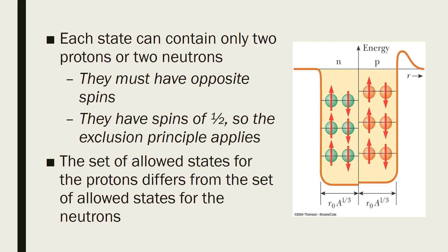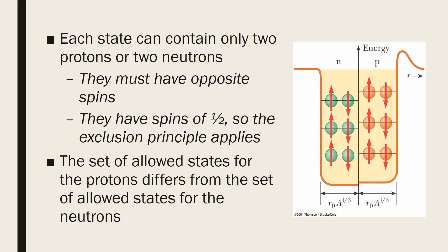The energy of protons is slightly higher compared to neutrons. In the nuclear shell model, it is assumed that nucleons exist in a potential well and are distributed in different shells. Depending on the occupancy of these shells, the stability of the nucleus can be explained.